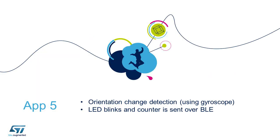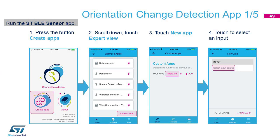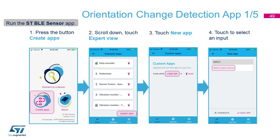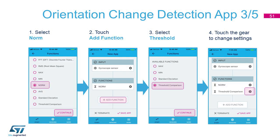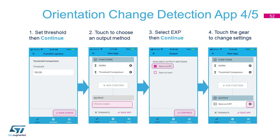The last example we want to show in this video is about orientation change detection. As usual, let's enter to create a new app and select an input sensor — this time it's the gyroscope. Let's put it in Low Power mode with an ODR of 12.5 Hz. Let's select the function and choose Norm, which is the square root of the sum of the squares. Let's also add another function and choose the threshold comparison. The properties of this function need to be set at 100 mdps.